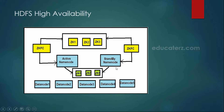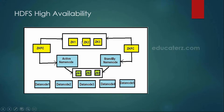How exactly this high availability setup can be done is with the help of zookeepers. Here you can see zookeepers — this is something called a zookeeper, and it is always a good practice to install your zookeepers in an odd number of machines, either 3 or 5 like that.